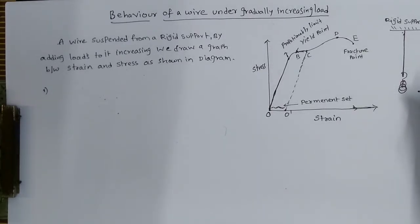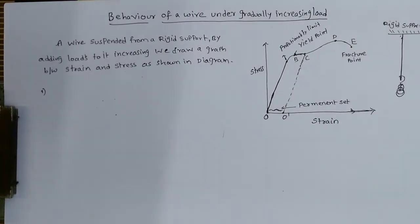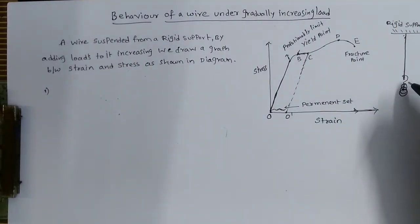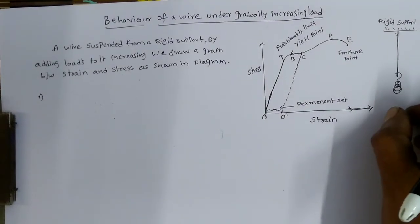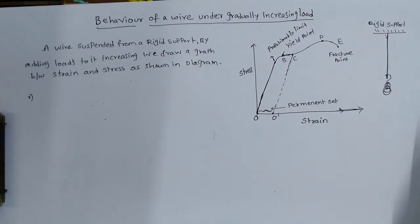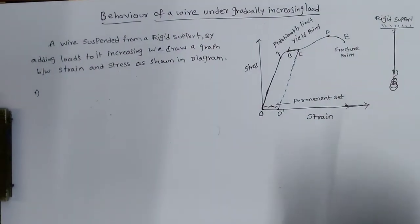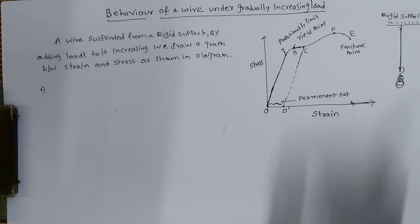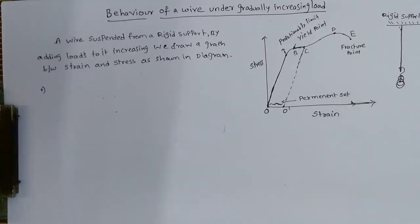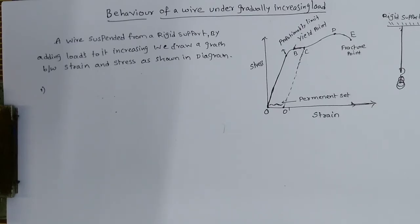Applying load means I am applying stress here. Elongation in the wire will be indicated with strain. If you add some more weight, it will be elongated. If you remove the weights, it doesn't regain its original shape. That means it has some elastic nature, but it doesn't obey Hooke's law. Hooke's law means stress is directly proportional to strain within the elastic limit — that is the definition of Hooke's law.